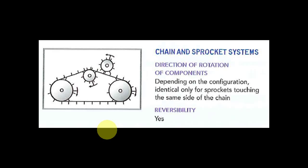The next system is a chain and sprocket system. This one is also reversible. You can go backwards or forwards. Now, this depends on the configuration. It's identical only for sprocket touching the same side of the chain. So, if you look at this one, these two guys are going both, all three of them inside are going both the same direction, whereas this one here on the outside is going the opposite direction. Is it reversible? Yes, we said that before.